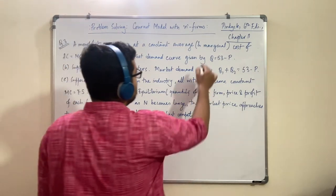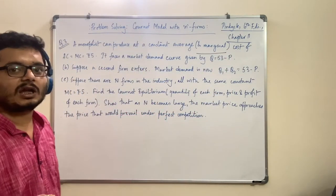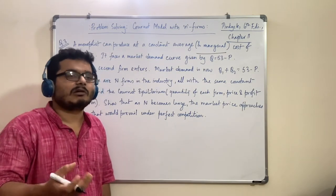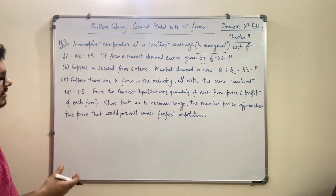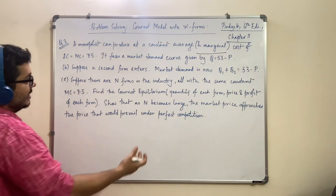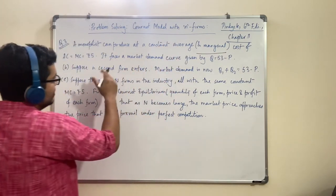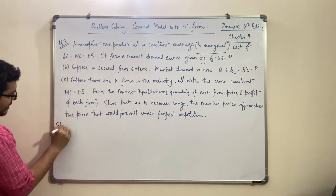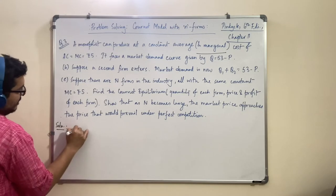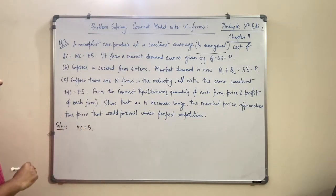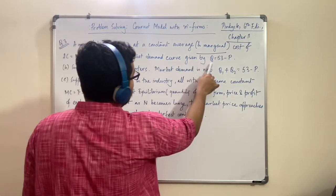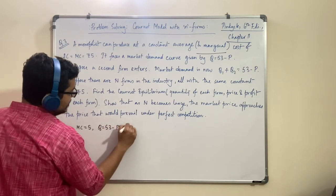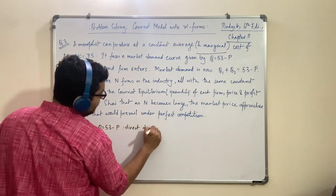Remember, if a problem is talking about constant average cost, it is actually telling you that it is also constant MC. Pindyck is a nice book and they mention that constant average means constant marginal — so AC = MC = 5. In our solution this is going to be a very important piece of information, so MC = 5. It faces a market demand curve given by Q = 53 minus P. Now remember, this is a direct demand function, not an inverse demand function.